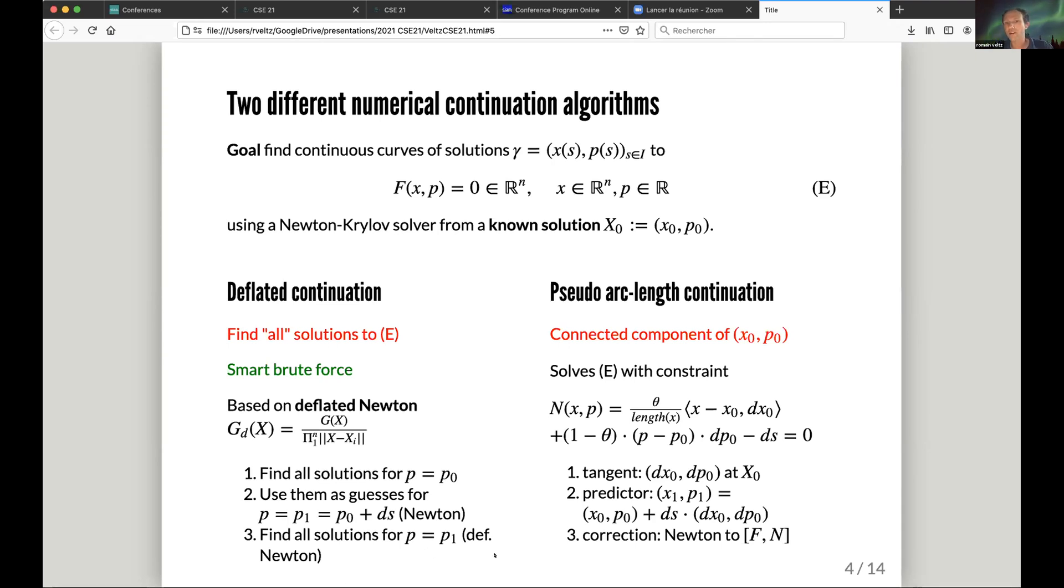The second algorithm is pseudo arc-length continuation, so I call it PALC. It gives you access only to the connected component of (x0, p0). Basically, the idea is you add a constraint, basically a linear constraint N(x, p). What you do is compute the tangent using this constraint: you compute the tangent of the curve gamma at, let's say, x0, then you compute a predictor which is the known solution plus a little bit of the tangent, you correct it with Newton, and you iterate. That gives you a curve of solutions.